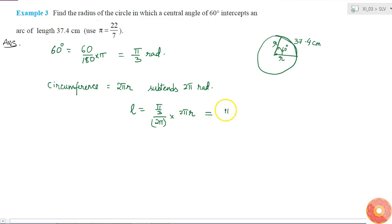Now I am given that length of the arc is 37.4 centimeters, which means that 37.4 is equal to 22 by 7 into r divided by 3. So what will be r is equal to?